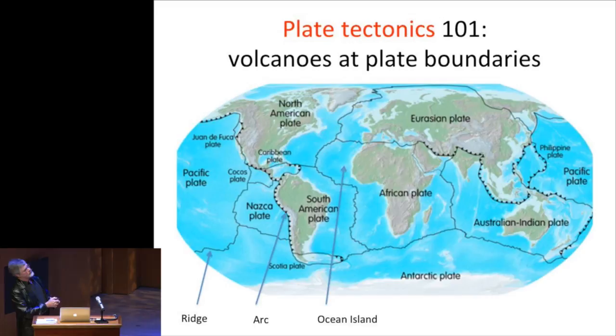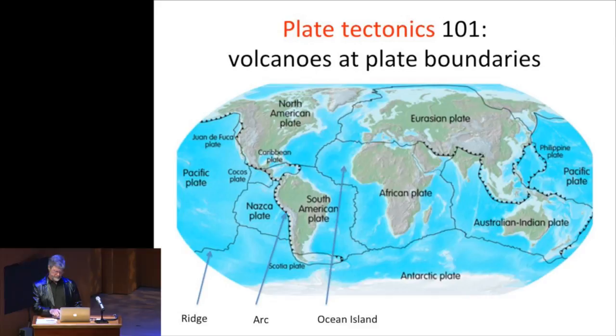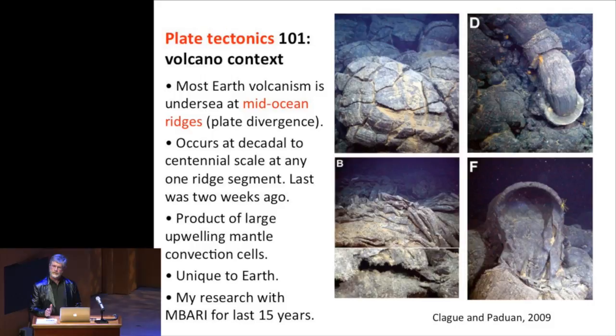Where does the mantle melt? At the boundaries of tectonic plates. At mid-ocean ridges, where two plates diverge and the mantle upwells to fill the void. At convergent boundaries, where volcanoes occur on top of the overriding plate. But there's also a none-of-the-above category — something like the Canary Islands, Hawaii, or the Galapagos — where volcanoes are not at a plate boundary and the mantle upwells for some other reason. On our planet, the majority of volcanism takes place at mid-ocean ridges. In any 100-kilometer-long segment of ridge, there are eruptions at the scale of decades, sometimes centuries. There was apparently one two weeks ago at Axial Seamount on the Juan de Fuca Ridge west of Oregon.